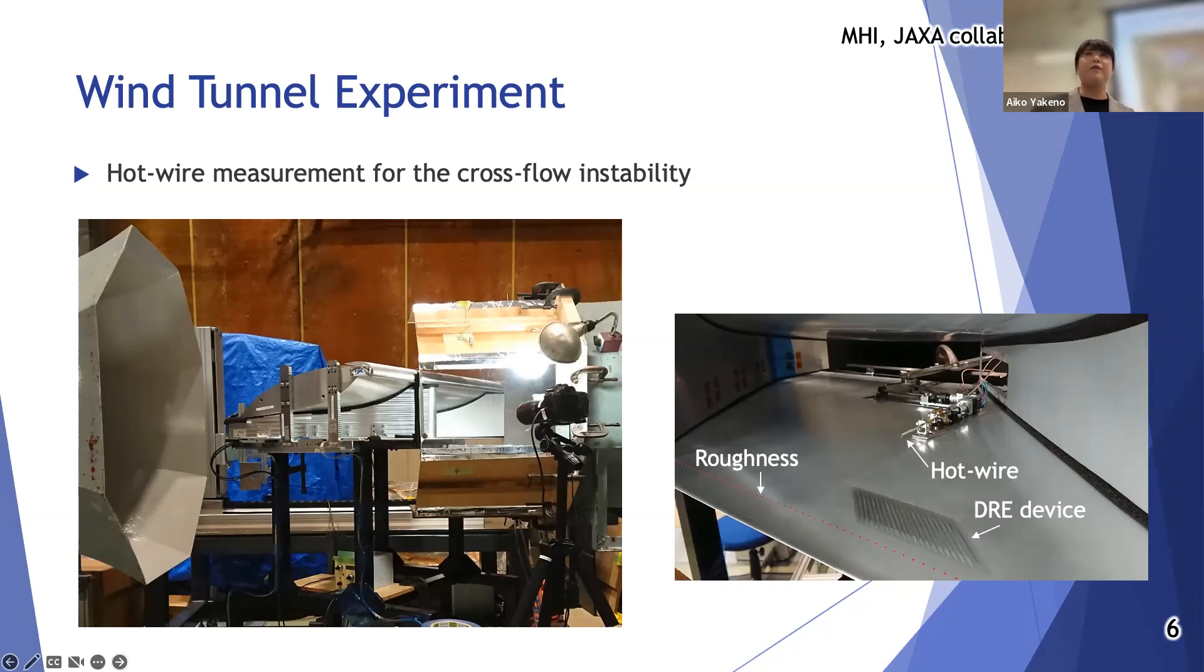This work is based on collaboration with JAXA and MHI, Mitsubishi Heavy Industry, through NEDO project. We prepared a flat plate with a pressure gradient object installed at the roof and confirmed the effect of the device on it. The DRE roughness element is set upstream.